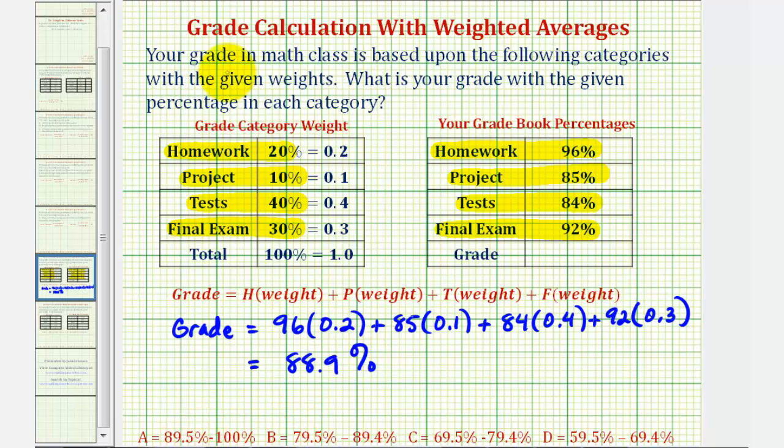Looking at the grade scale below, this probably isn't quite what you were hoping for. Notice the range for a B is 79.5 percent to 89.4 percent. Therefore, your course grade would be a B, even though it is a high B.